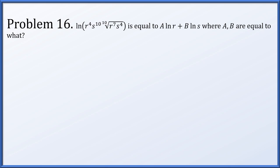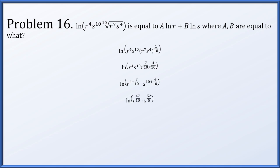Problem 16: we have the natural log of r to the 4th times s to the 10th, times the 10th root of r to the 7th times s to the 4th, equal to some multiple of ln r plus some multiple of ln s. Replacing the 10th root with an exponent of 1 over 10, we distribute that exponent and combine: r to the 4th times r to the 7 tenths gives r to the 47 over 10, and s to the 10th times s to the 4 over 10 gives s to the 52 over 5. Breaking the product up as a sum and bringing exponents out as scalars, the multiple of ln r is 47 over 10, and the multiple of ln s is 52 over 5.